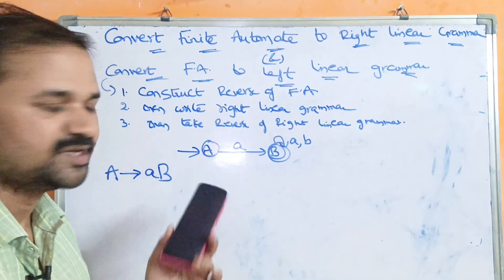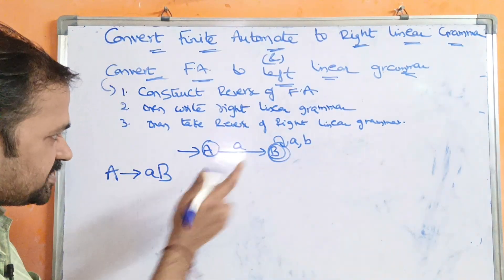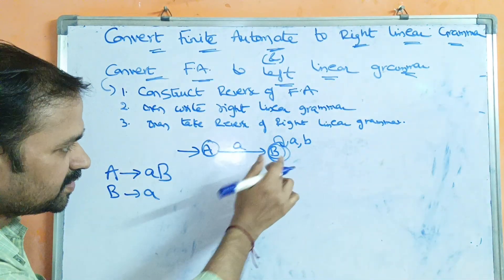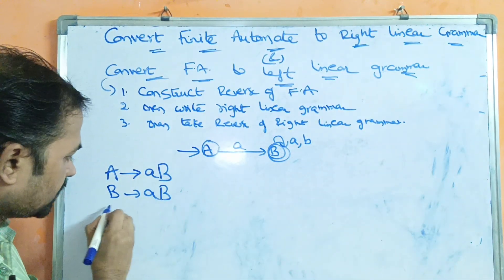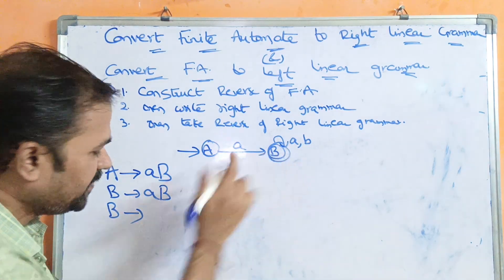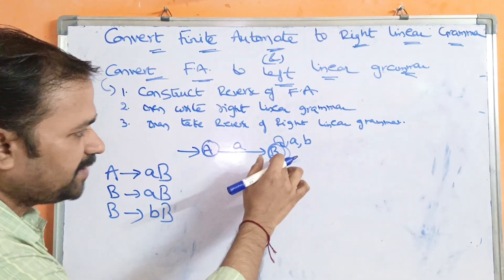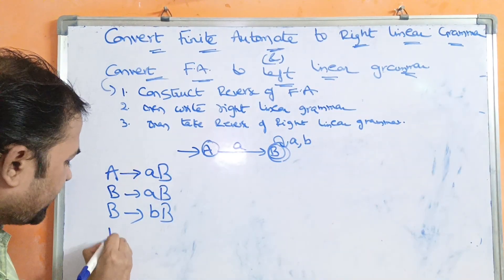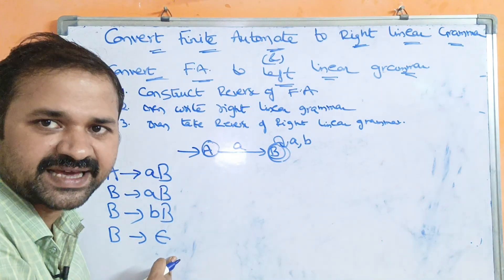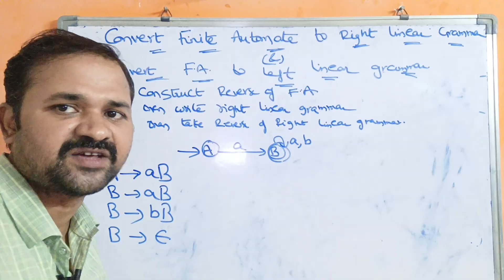Initially we are constructing right linear grammar. Next, b on 'a' stays at b, so B → aB. Then b on 'b' stays at b, so B → bB. Since b is the final state, we also write B → ε to specify that b is the final state.